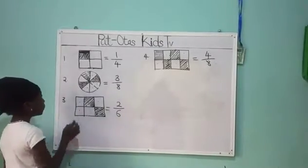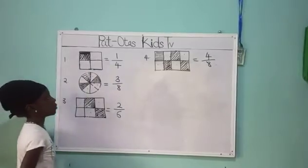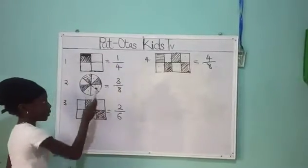And this 1 here is the shaded part. That's the way we got 1, the numerator.